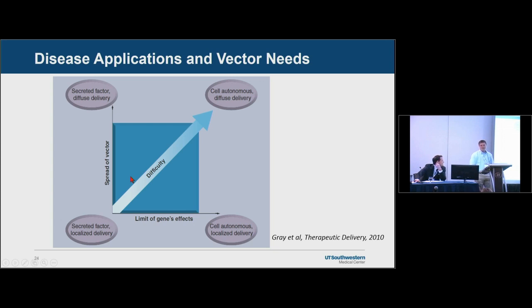Regarding a question about seeing expression after three days following intraparenchymal injection in the brain: if you put AAV in cultured cells, you'll see expression within 24 hours very clearly. If you're doing an intraparenchymal injection, you will see expression probably within 24 hours, with peak expression around two to four weeks, remaining stable after that unless you have some kind of silencing issue.